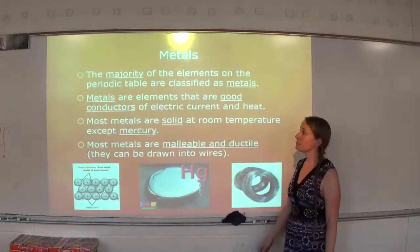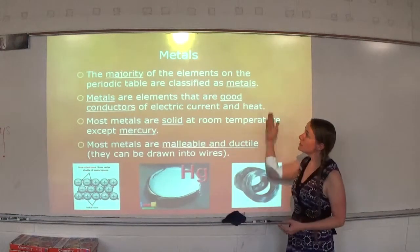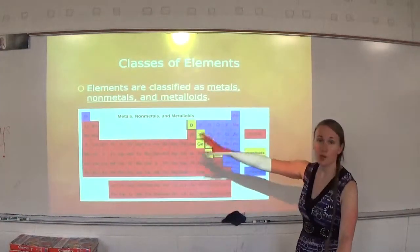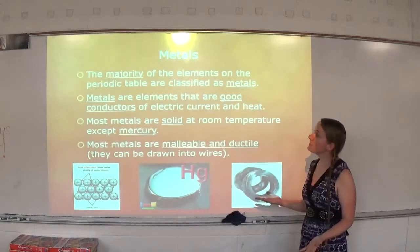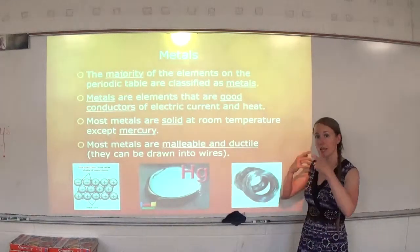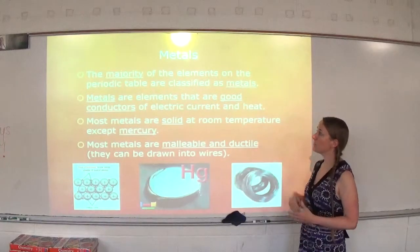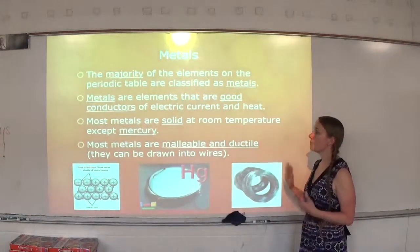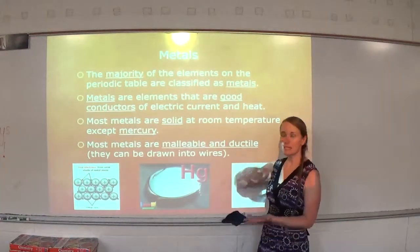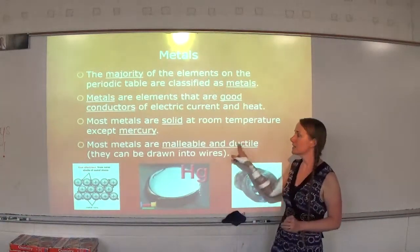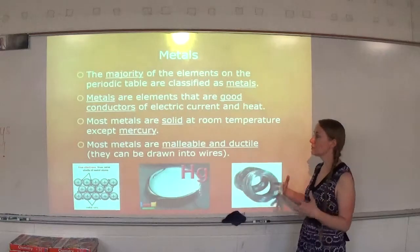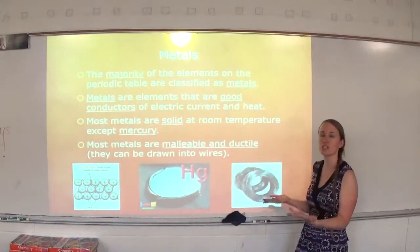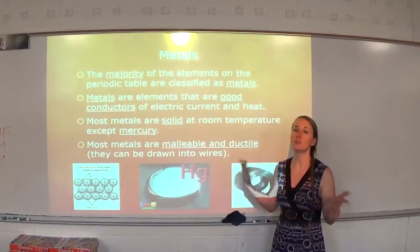What defines metals and nonmetals? What are their properties like? The majority of the elements on the periodic table are classified as metals. Metals are elements that are good conductors of electric current and heat — they allow electricity and heat to flow through easily. Most metals are solids at room temperature, except mercury is a liquid metal at room temperature. Most metals are malleable and ductile: malleable means you can easily hammer them and they'll reshape, and ductile means they can be drawn into wires. If you hit metals with a hammer or try to force them to change shape, they will change shape — they're not going to shatter.